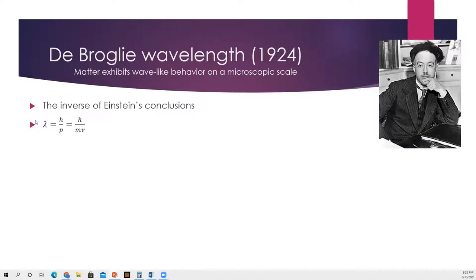De Broglie is doing the inverse of what Einstein did. Where Einstein said light waves are actually photon particles, de Broglie is explaining that very small obviously-particle things like electrons are also waves. So waves are particles and particles are waves — hence wave-particle duality. The de Broglie wavelength is: lambda (wavelength) of a particle equals Planck's constant h divided by the particle's momentum, and momentum is mass times velocity. This is a very fundamental relationship we'll use in Schrödinger's wave equation.